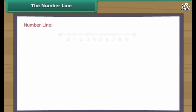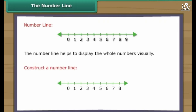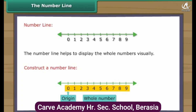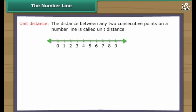The number line helps to display whole numbers visually. To construct a number line, we draw a straight line and choose any point on the line, labelling it zero — this point is called the origin. We then choose some convenient length and, moving to the right, mark off consecutive intervals along the line, labelling each new endpoint with the next whole number.